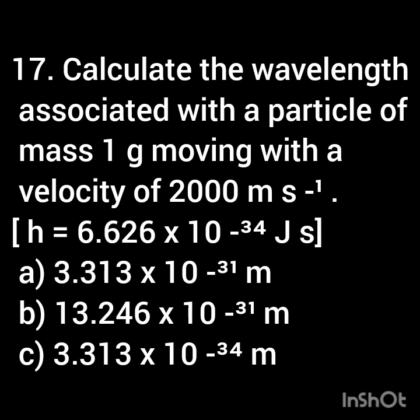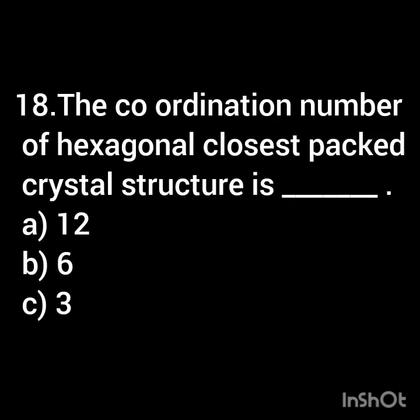The coordination number of a hexagonal closest packed crystal structure is dash. Option A: 12. Option B: 6. Option C: 3.